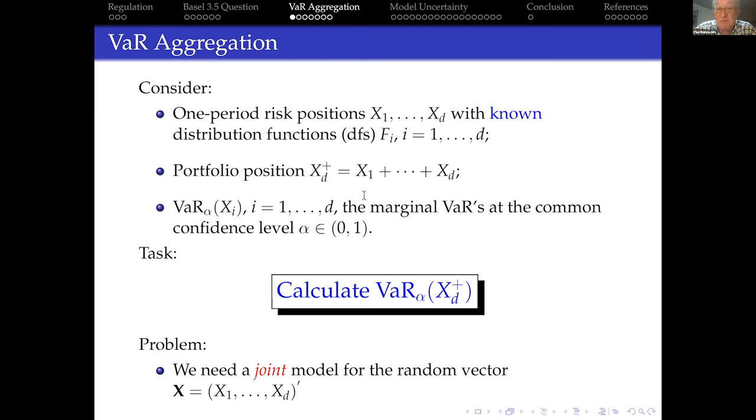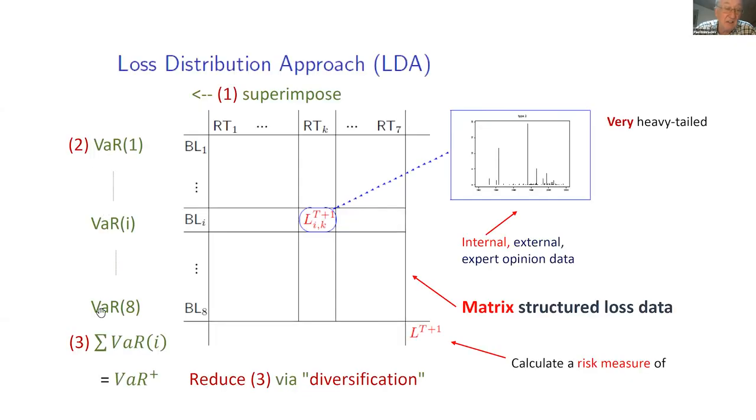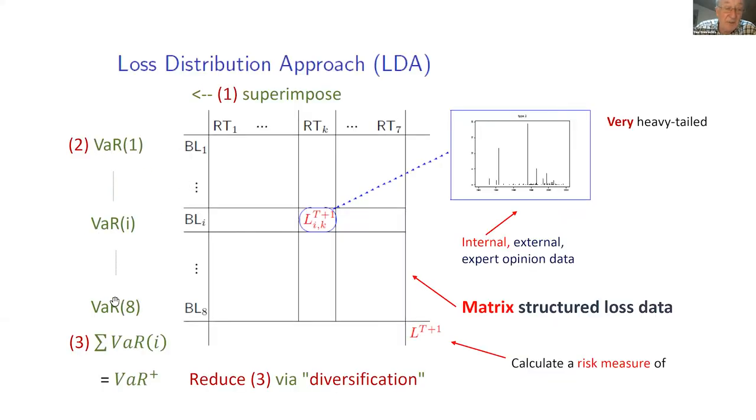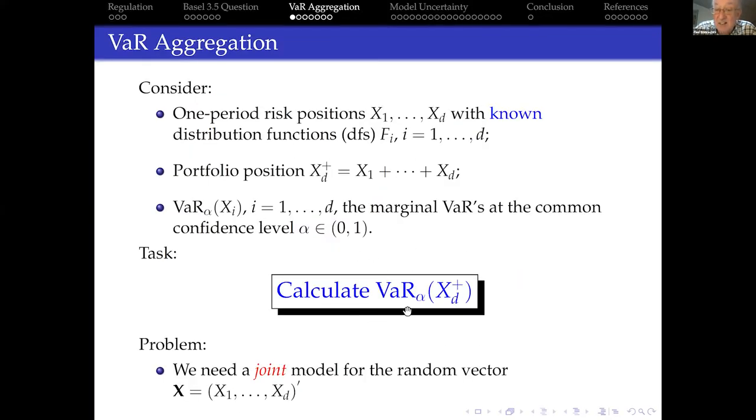Now, as in the example of operational risk, I'm interested in the sum of the risks. So I'm interested in the sum of the risks. Then I have the marginal VARs. Remember, I say I was able to calculate or estimate these marginal risk measures. But now I'm interested in calculating the global risk measure for the joint position. Now you immediately know this is nothing to do with uncertainty as such, but of course, this is impossible mathematically. You cannot do that because you only have the marginal information. I only give you the marginal distributions of my risk positions. In order to calculate your risk measure of the sum of your positions, you need a joint model. But you don't have it.